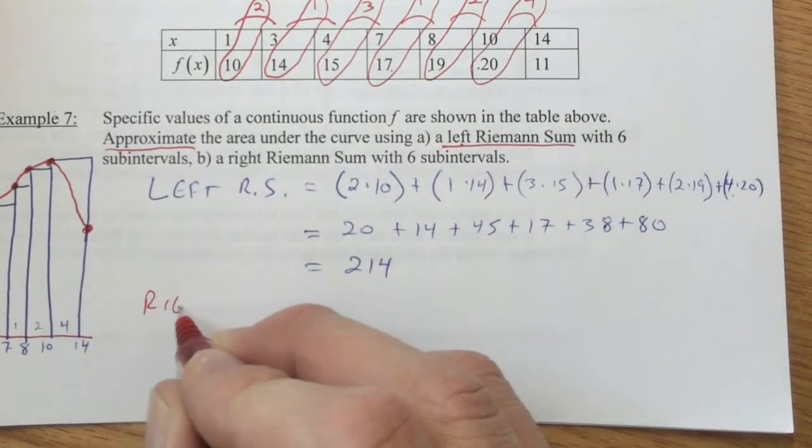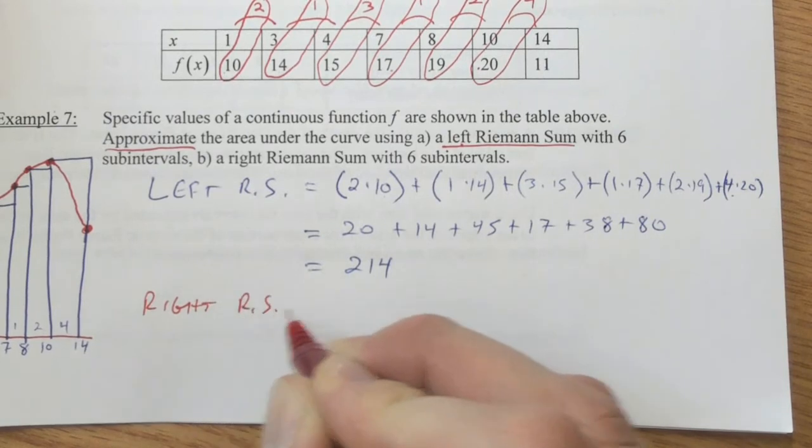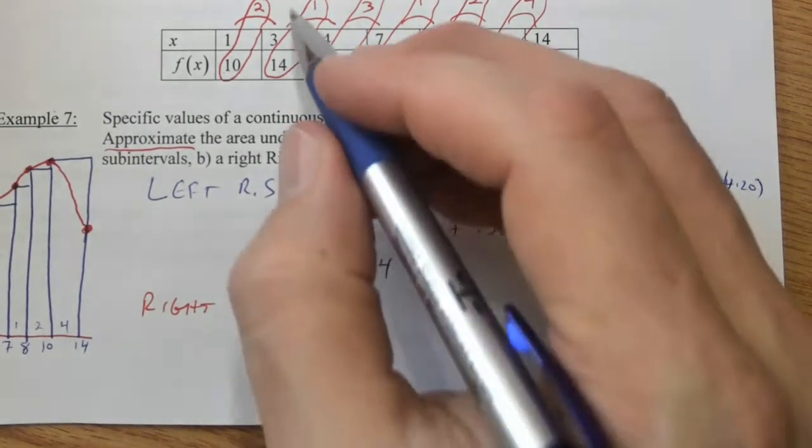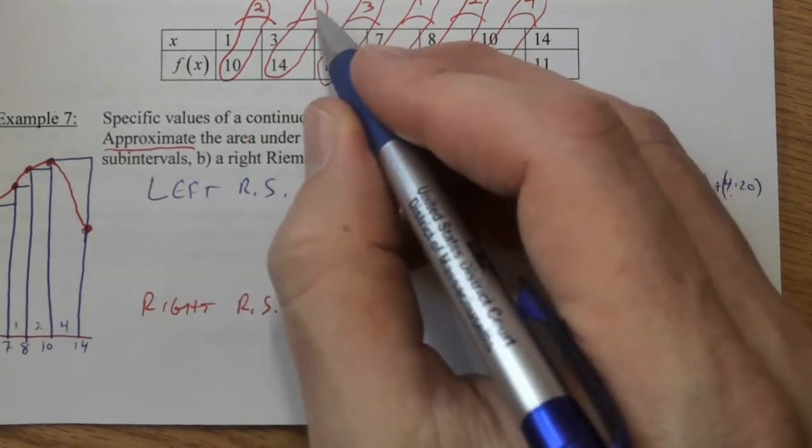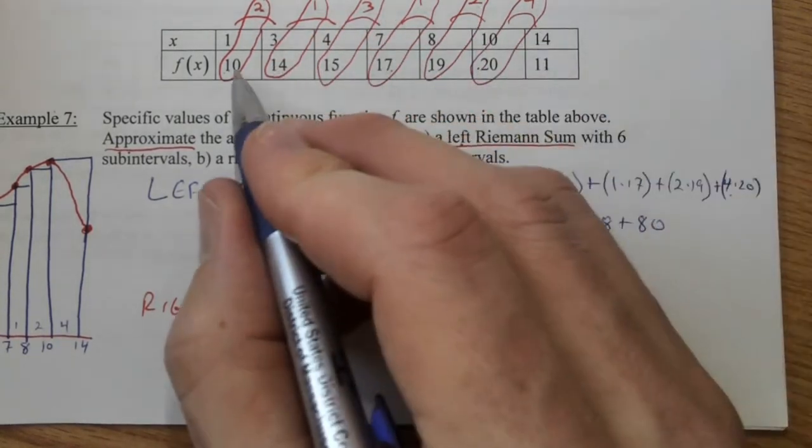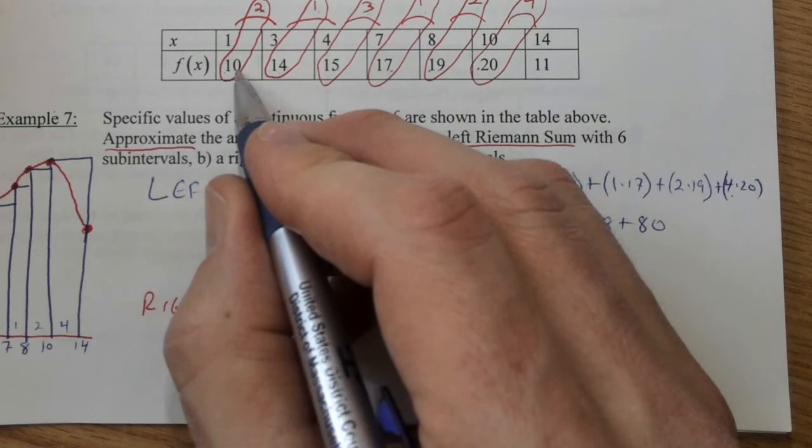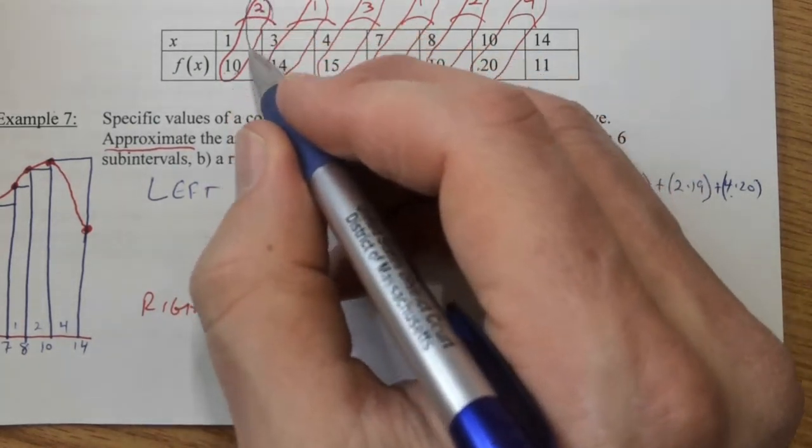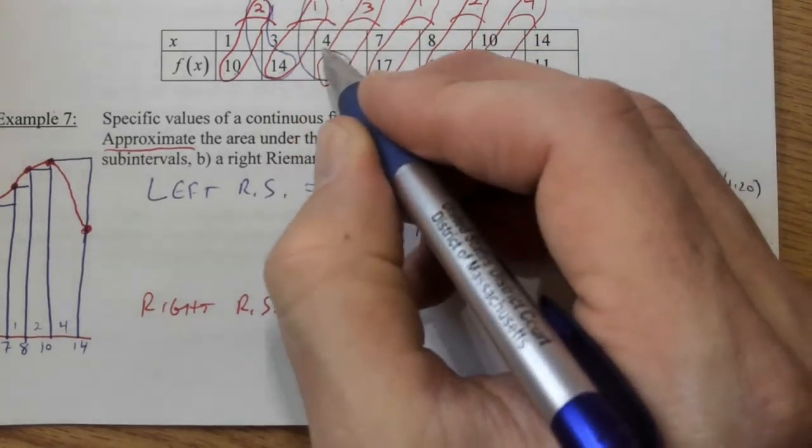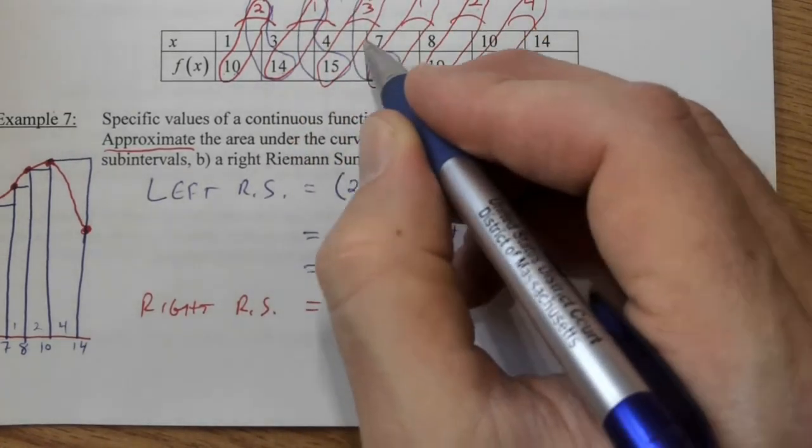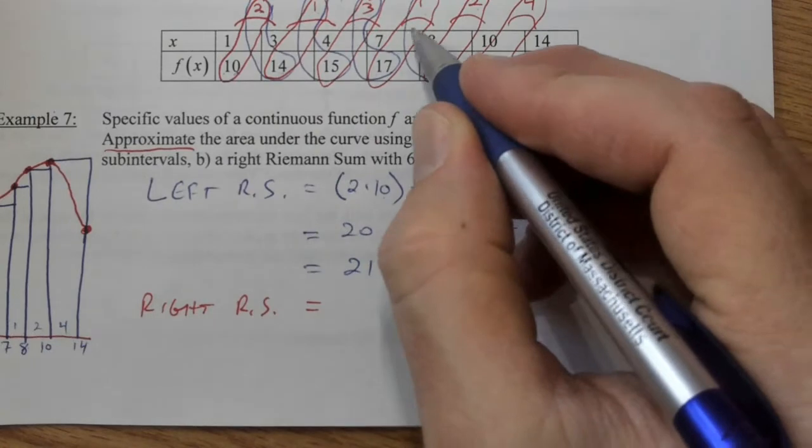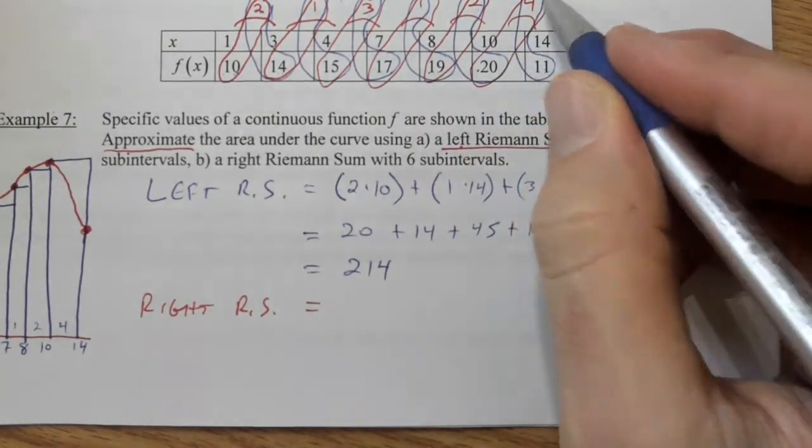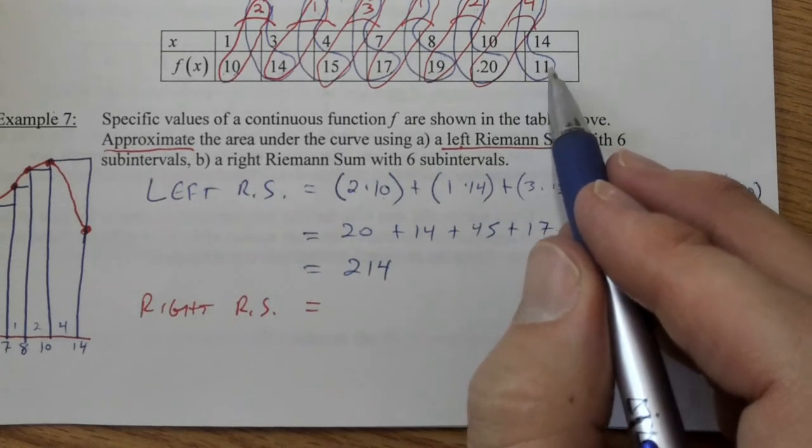When we do a right Riemann sum, we're still going to use the same bases, but we're not going to use the left endpoint of our rectangle. We're going to use the right endpoint. So we're going to do the two and the fourteen, and the one and the fifteen, and the three and the seventeen, and the one and the nineteen, the two and the twenty, the four and the eleven. Basically, this time, the eleven does get used and the ten is ignored.